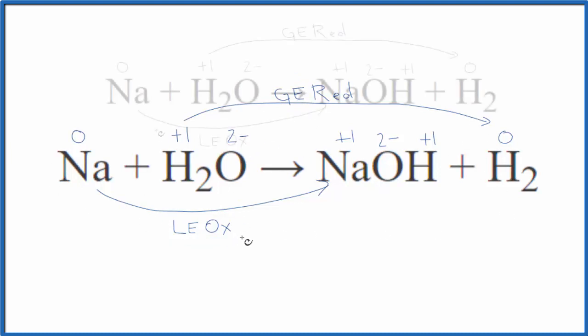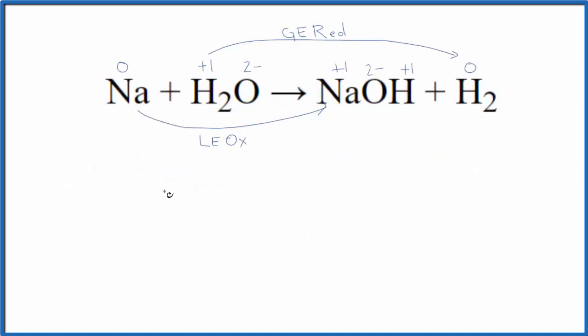Now we can write the half reactions. We'll start with sodium. Sodium goes to the NaOH, the sodium hydroxide. That's one of the half reactions. Then H2O goes to the H2.